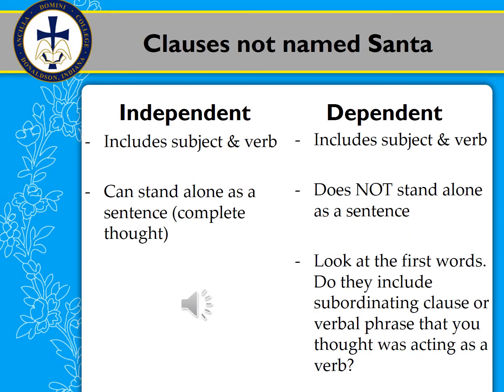As you can see here, we have two types of clauses. We just learned that phrases have either a subject or a verb, but not both, and clauses have a subject and a verb. So theoretically, a clause could be a sentence. Let's look at the different types of clauses: we have the independent clause and the dependent clause.